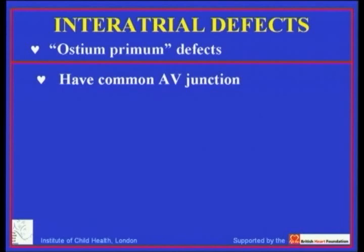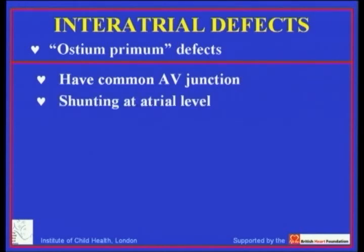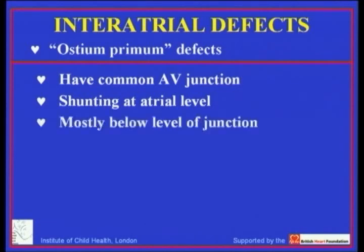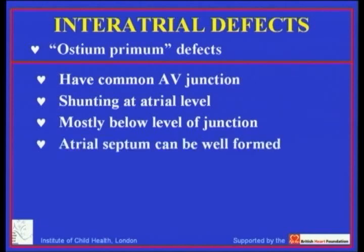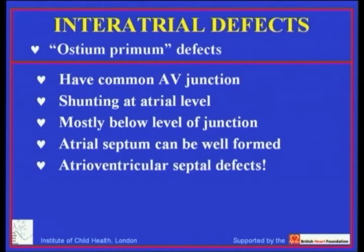And then the ostium primum defect, which we will discuss later. The essential phenotypic feature of this lesion is the common atrioventricular junction — an atrioventricular septal defect with shunting exclusively at atrial level, albeit that much of the shunting is below the level of the atrioventricular junction. The key here is that again in this lesion the atrial septum can be well formed, the oval fossa can be intact, and this lesion is an atrioventricular septal defect.